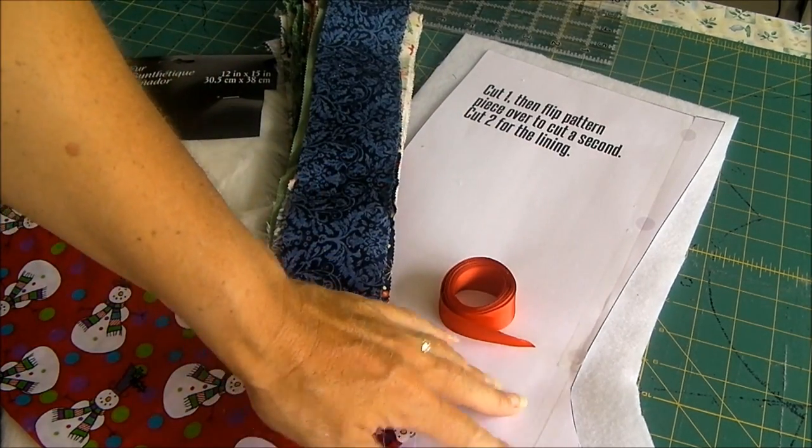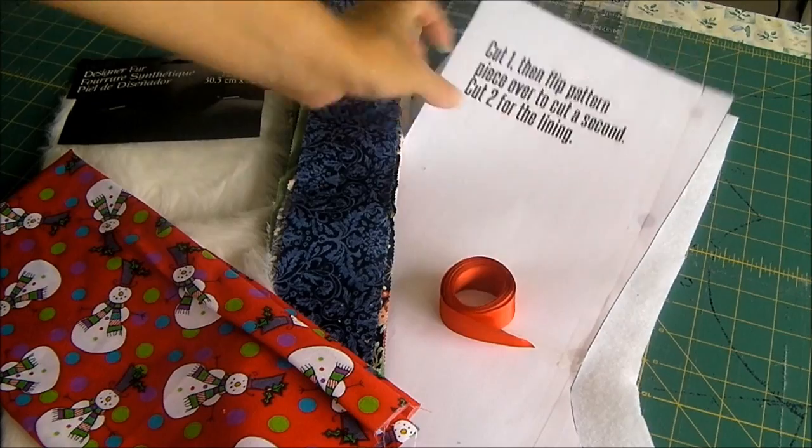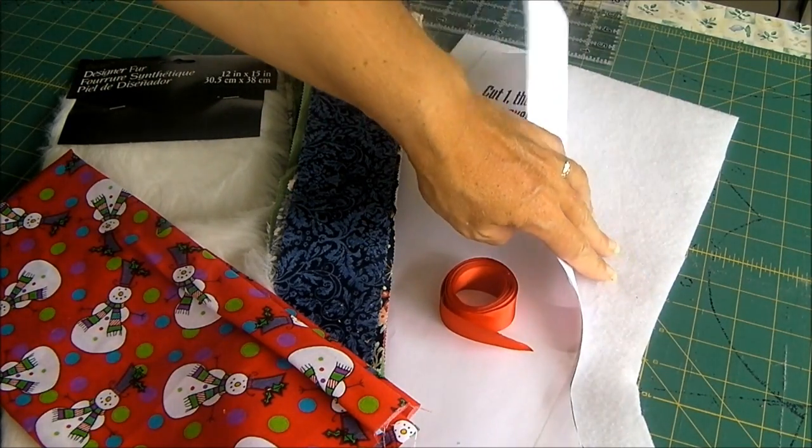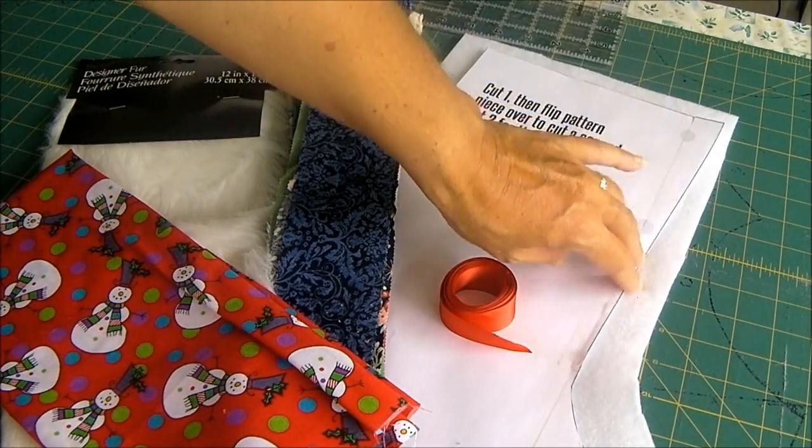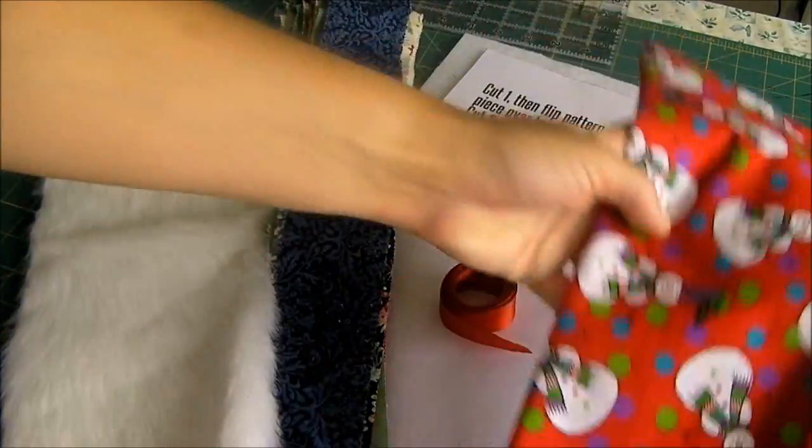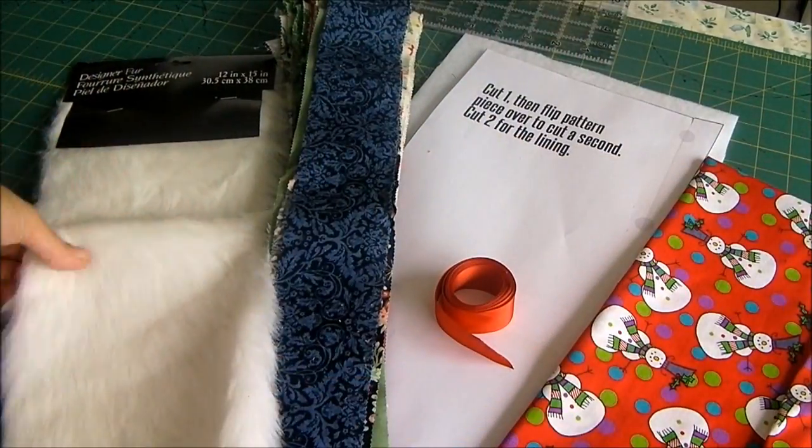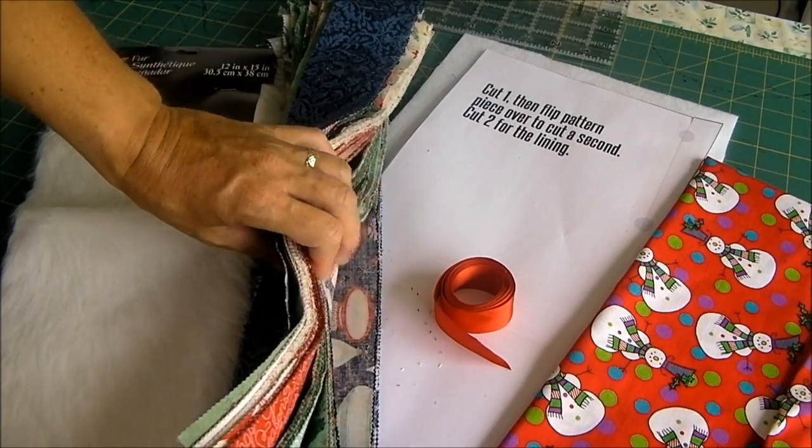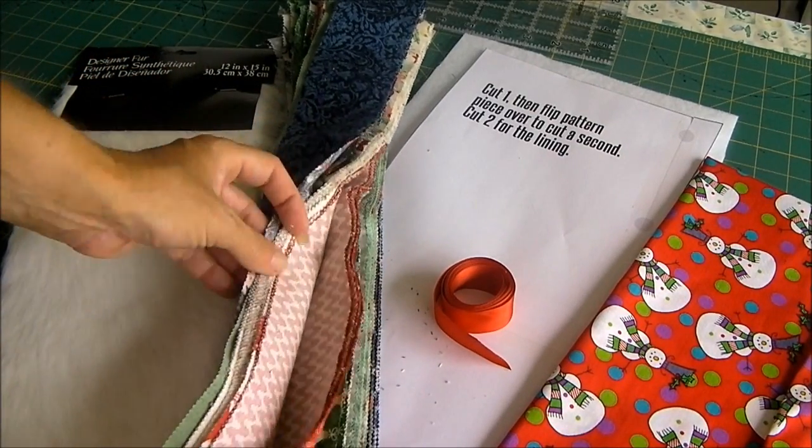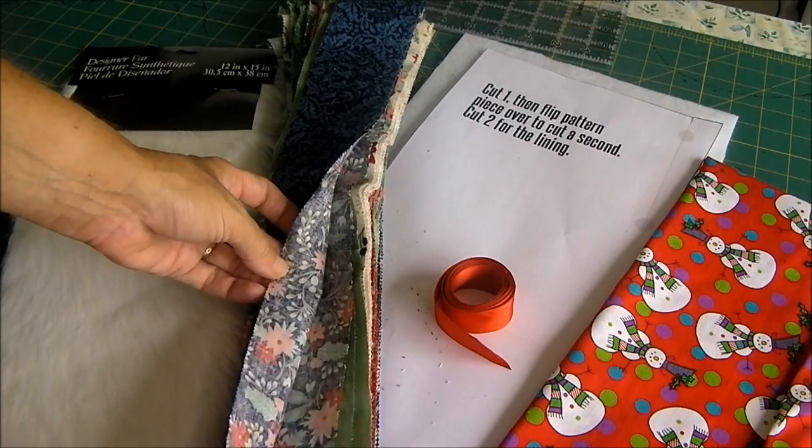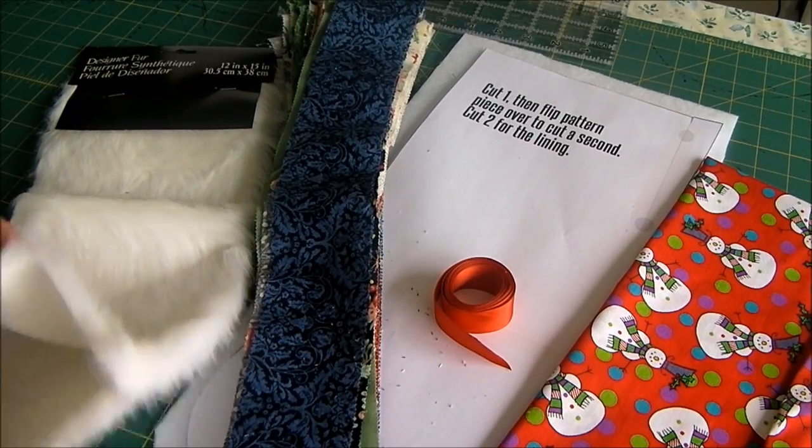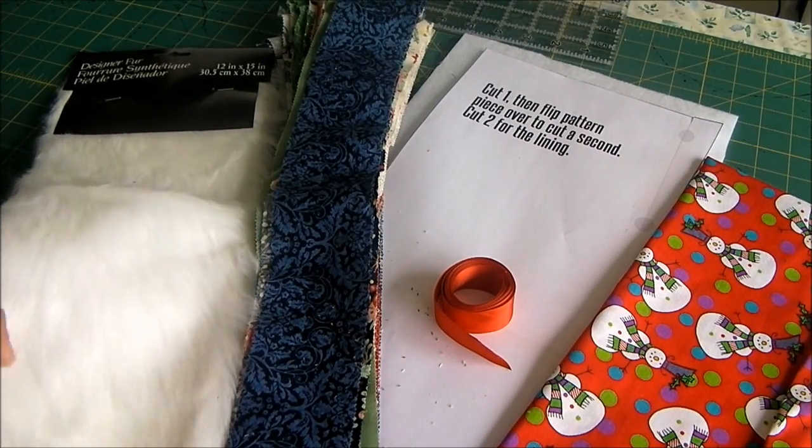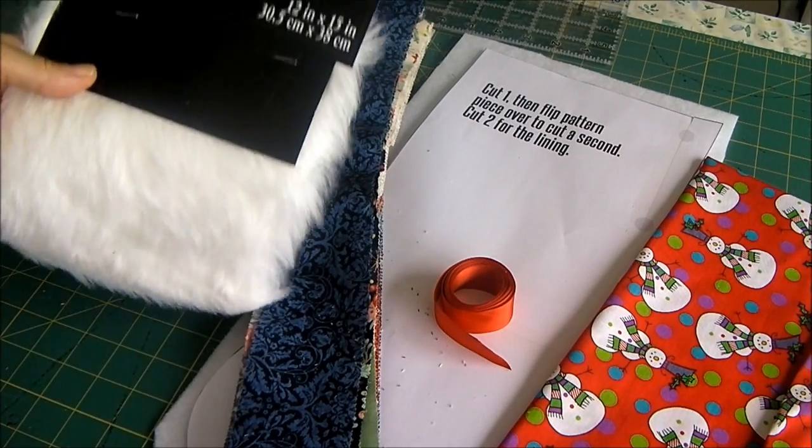You need to print out and assemble your stocking pattern piece and you'll need two pieces of fleece or low loft batting. You'll need some fabric for the lining and then either some fabric scraps or if you have one a Christmas jelly roll or in fact any jelly roll which has got some nice bright colors or just long strips of scrap fabric and some fake fur.